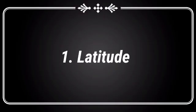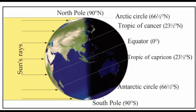Latitude. Look at the picture. The sun's rays fall vertically over the tropical regions. The temperature will be higher over places where the vertical rays of the sun fall.